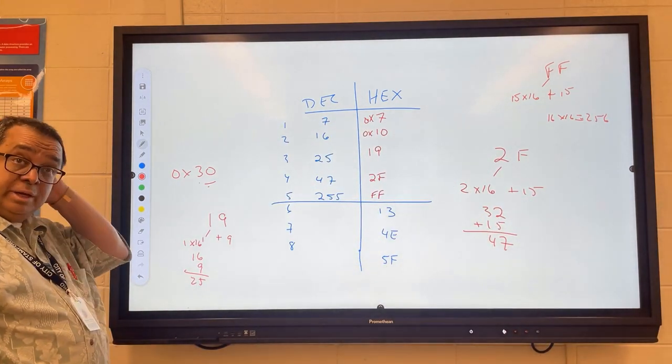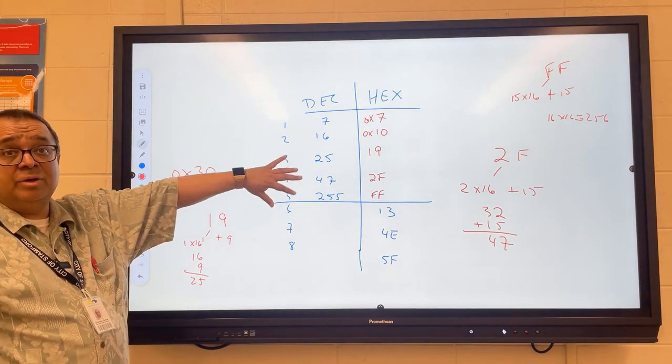So that would be essentially 16 times 16. That's 256. It's 2Fs per value, yeah. So that's basically how we do those. Okay?